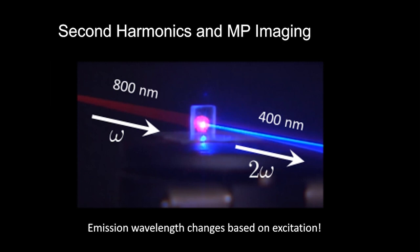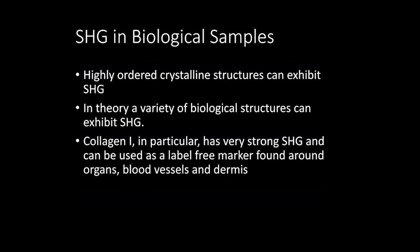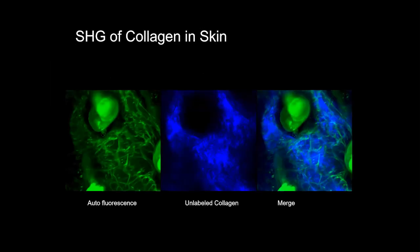SHG comes from highly ordered crystalline structures. In theory, DNA, microtubules, and others can exhibit SHG, but in practice on the microscope, collagen I exhibits the highest readily visible SHG signal. This is incredibly useful in a mouse: you can see collagen in the dermis, around blood vessels, and around organs, so as you scroll through and focus, you know exactly where you are anatomically. Here's an example of SHG in skin — autofluorescence on the right, unlabeled collagen in the middle, and merged — completely unlabeled, yet many structures are visible.